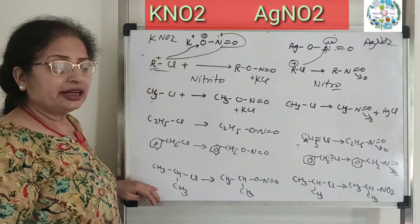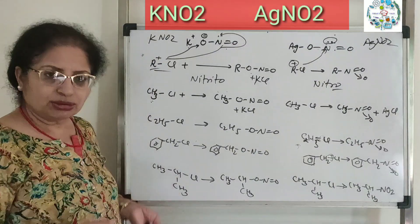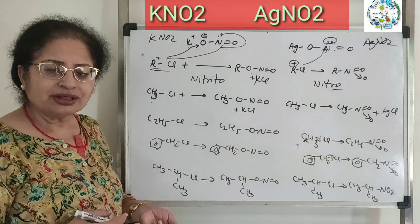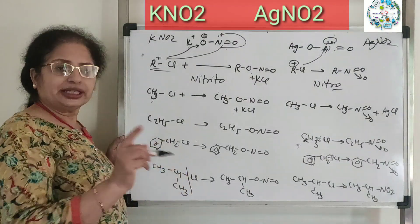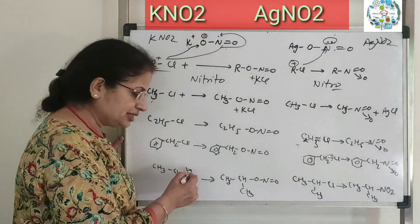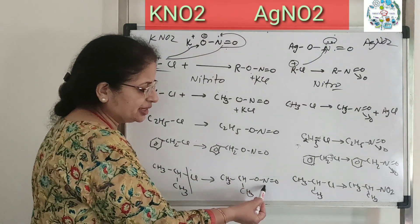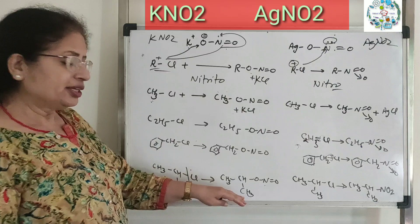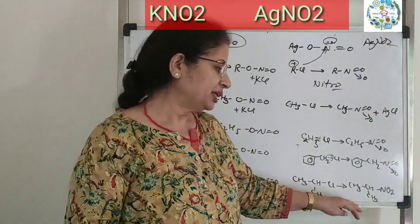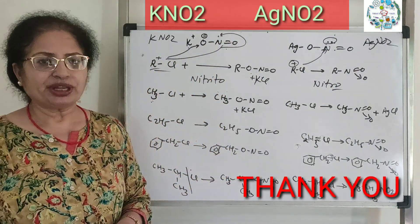Next, isopropyl, tertiary butyl, neopentyl groups as R - these haloalkanes on reaction give nitroisopropane and related products. Thank you.